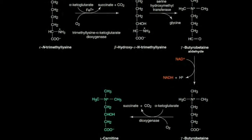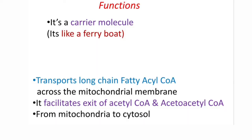This trimethyl lysine is then converted into carnitine in the next four reactions. The amino acids required for the synthesis of carnitine are lysine and methionine. This synthesis mainly takes place in the liver and also to some extent in the kidney.